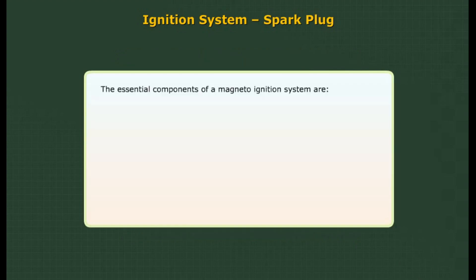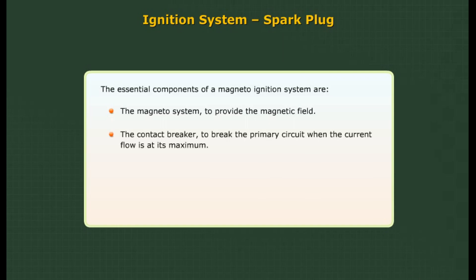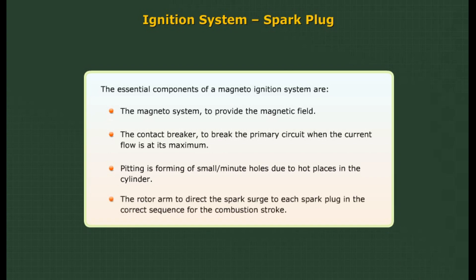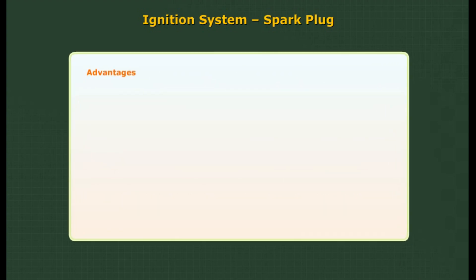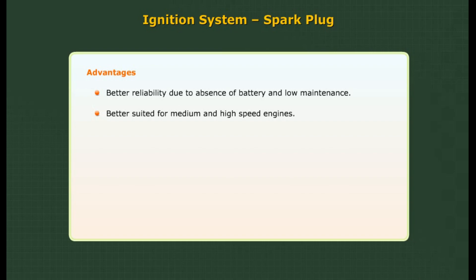Essential components of a magneto ignition system: the magneto system, to provide the magnetic field; the contact breaker, to control the primary circuit when current flow is at its maximum; and the rotor arm, to direct the spark surge to each spark plug in the correct sequence for the combustion stroke. Advantages include better reliability due to absence of a battery and low maintenance, suitability for medium and high speed engines, and more compact modern magneto systems requiring less space.